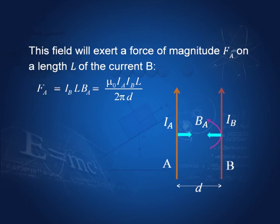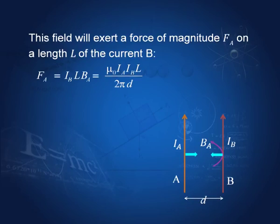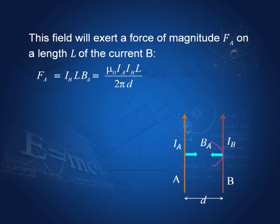You can see this is symmetric whether we start with A or with B — the mutual force that the two wires feel is mu_0 I_A I_B L divided by 2 pi D. The force per unit length is F_A divided by L, which equals mu_0 I_A I_B divided by 2 pi D. That is the force between two wires.